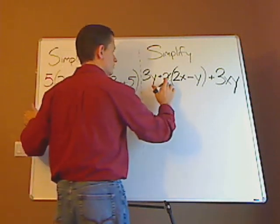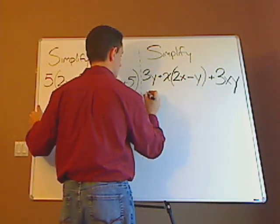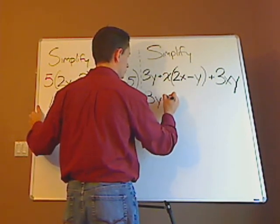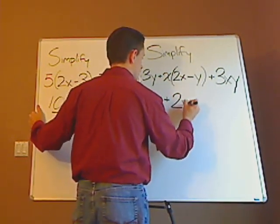So to distribute, you distribute the x to each of these. So you have 3y, I'm just bringing it down, plus 2x squared.